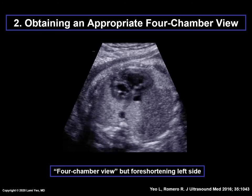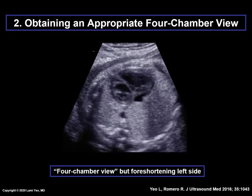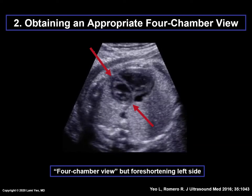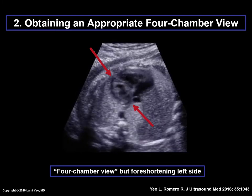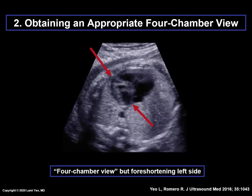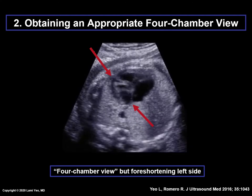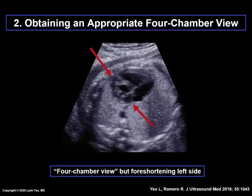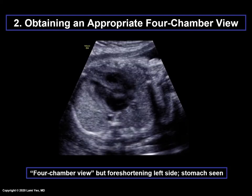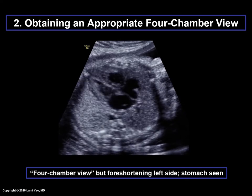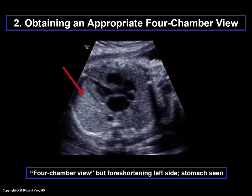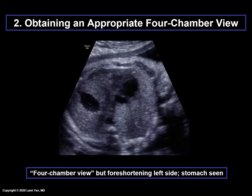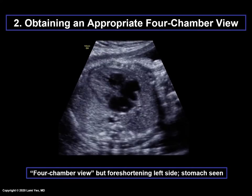Here is a four-chamber view of the normal fetal heart, but notice that the left side is foreshortened or appears cut off. Sonologists frequently tend to foreshorten the left versus the right side of the fetal heart when imaging the apical four-chamber view to acquire a STIC volume. If this occurs, the transducer should be tilted and readjusted so that there is symmetry of both the left and right sides of the heart. If the left side is foreshortened and the stomach is also seen, this cannot be a true axial plane, because the stomach can never be seen in the same plane as the fetal heart.